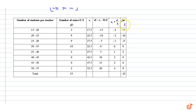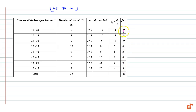Now we will calculate fi × ui. When fi = 3 and ui = −3, fi × ui = −9. When fi = 8 and ui = −2, fi × ui = −16, and so on. The sum of all frequencies in this column is 35, and the sum of all fi × ui values is −23.